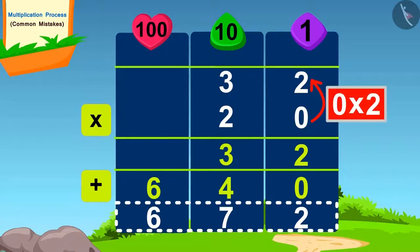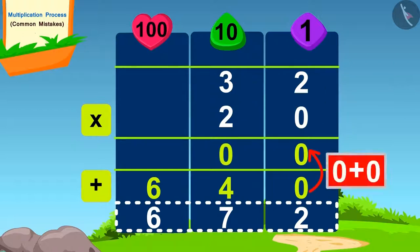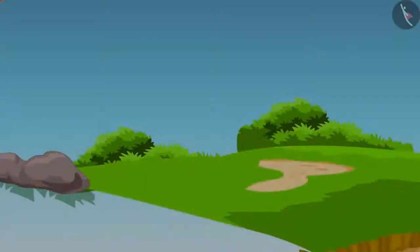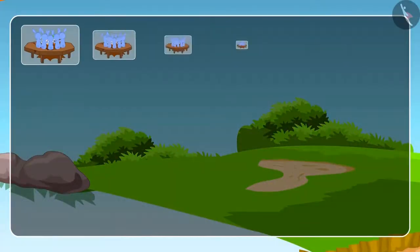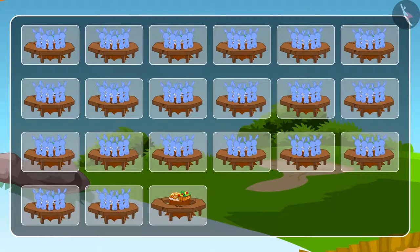So, how do we find the right answer? Well done children, you have found the answer to this correctly. Only 640 rabbits were to arrive at the party. While calculating, Shere Khan made a mistake and he counted 32 more. Therefore, those seats were left empty.